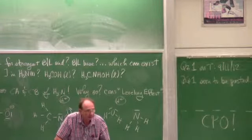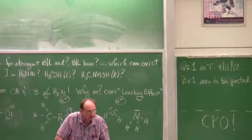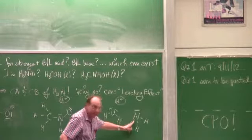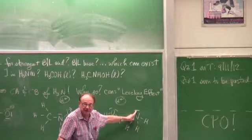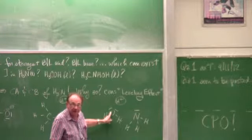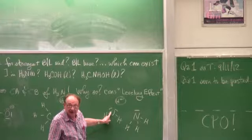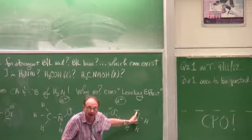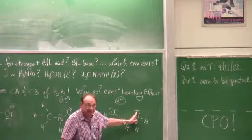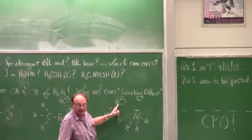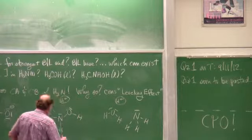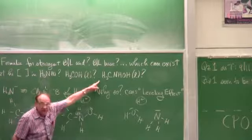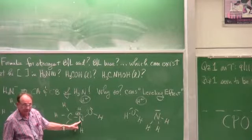Nitrogen has a lower electronegativity than oxygen, which means this electron pair on nitrogen is not stabilized as effectively as the electron pairs on oxygen. This atom is of lower electronegativity, making this electron pair more reactive — it's less stabilized. The more reactive it is, the more readily it grabs H⁺. So our conjugate acid for hydroxylamine has the plus charge on nitrogen.